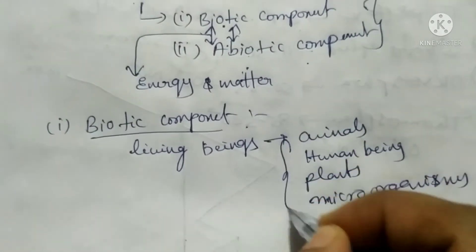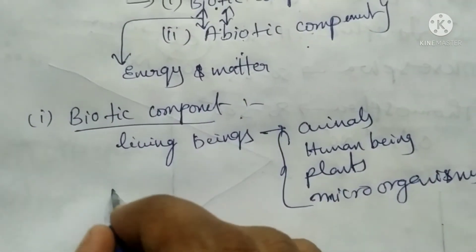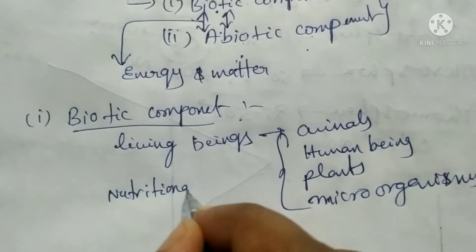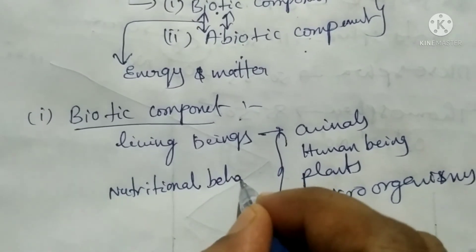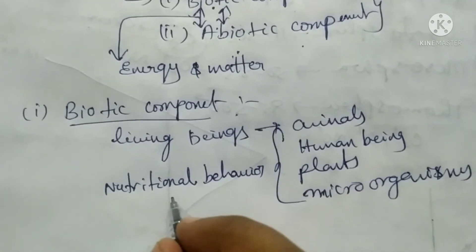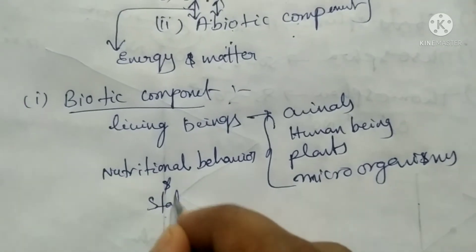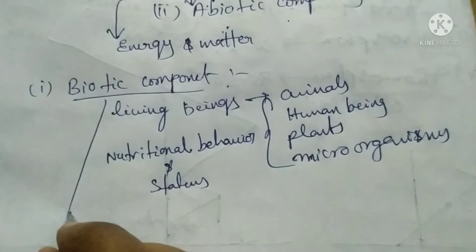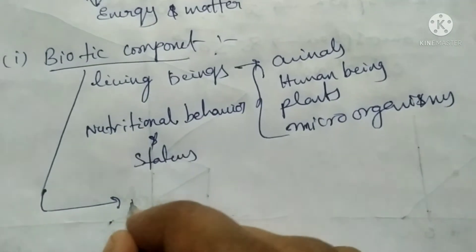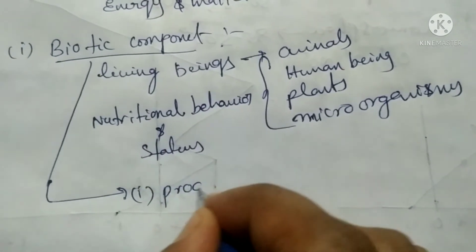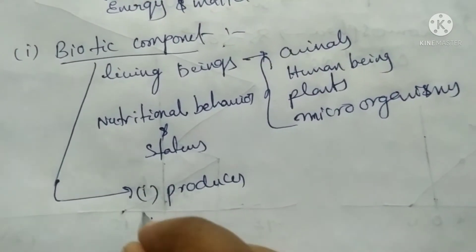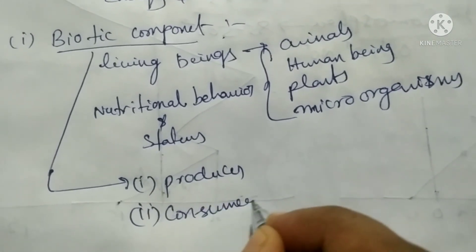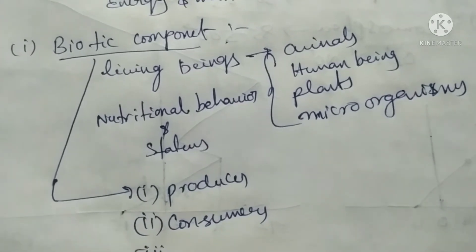Based on their nutritional behavior and status, the biotic components are classified into three types: one is the producers, second one is the consumers, and third is the decomposers.